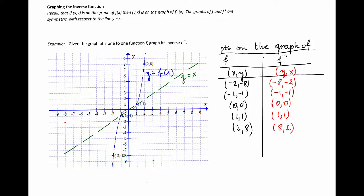So we have the points: negative 8, negative 2; negative 1, negative 1; 0, 0; 1, 1; and 8, 2. And now we'll graph the function that is symmetric with respect to the line y equal x. And that graph is going to be like this. So this is the graph of the function y equals f inverse of x.